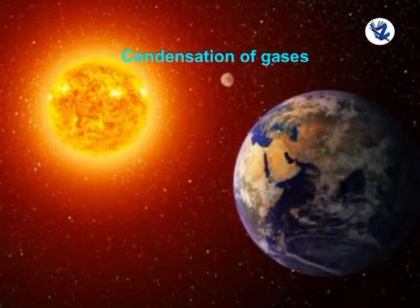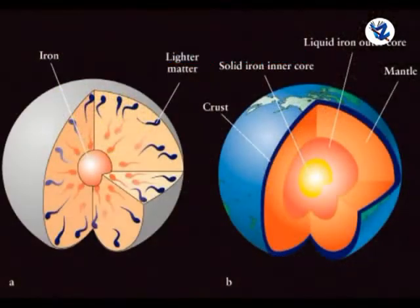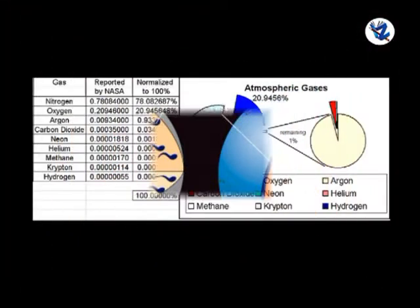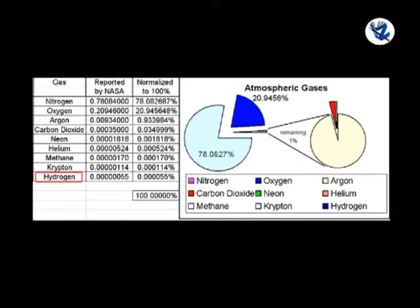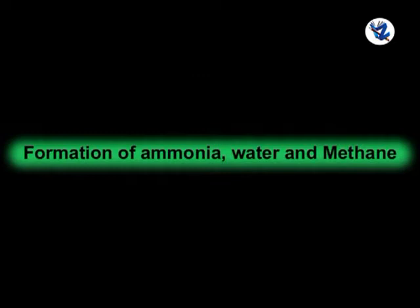As the Earth moved away from the Sun, the temperature slowly decreased and this led to the condensation of gas. The heavy elements like iron and nickel sank to the center and formed the solid core of Earth. The lightest elements like Helium, Hydrogen and Oxygen occupied the atmosphere of the Earth. The next step involved the formation of ammonia, water and methane.